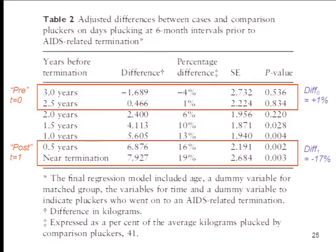So this is delta 0 — if you average those, it's about plus 1%. And delta 1 is about minus 17% — with the signs switched consistent with our regressions. What's the difference in difference? Minus 18%. That's the difference-in-difference estimate, taking their data and putting it into our regressions.